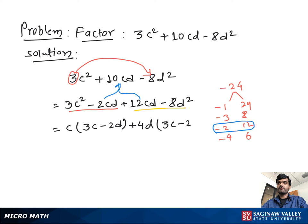2D. Then from both sides, we take out 3C - 2D as common. Then we have left C + 4D. These are our final factors.